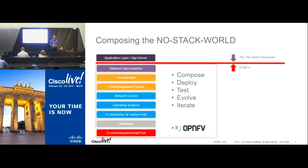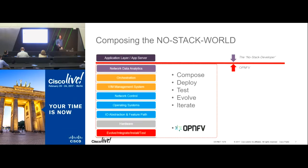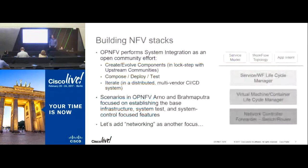Rather than creating yet another open source project that builds a stack, OPNFV is a project that does systems integration as an open community effort. We take all these various components, piece them together, test them, find gaps, close those gaps, and start over. We test in an international setup with labs in Asia, Europe, and the US — some vendor proprietary, some donated, some open like the Linux Foundation lab in Portland — running deployments continuously to iron out what works as a full solution stack.